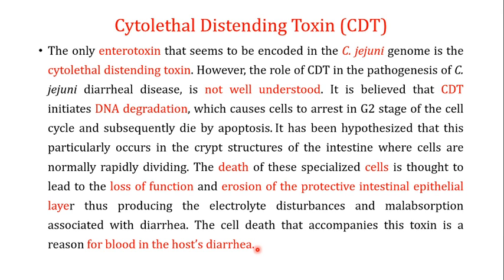When the bacteria attach to the cell and invade it, they produce toxins. The only enterotoxin that appears to be encoded in the Campylobacter jejuni genome is the cytolethal distending toxin, or CDT. It is called cytolethal because the cell usually dies due to this toxin. It is called distending because when the cytolethal distending toxin enters into the cell, it makes the cell take on a distended structure. However, the role of CDT in the pathogenesis of C. jejuni diarrheal disease is not well understood.